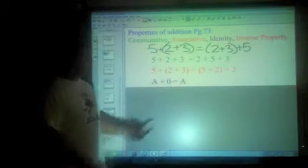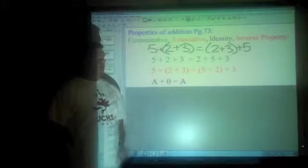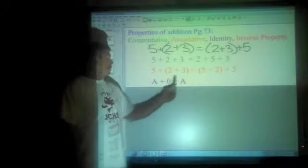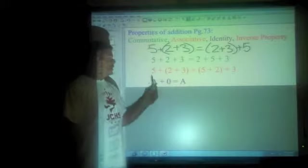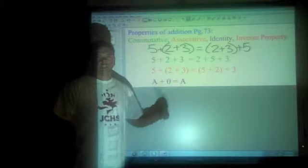Identity is pretty easy. Anytime you add 0 to something, you stay with the something. So 5 plus 0 is 5. 100 plus 0 is 100. A billion plus 0 is a billion. Dogs plus 0 is dogs. It doesn't matter.